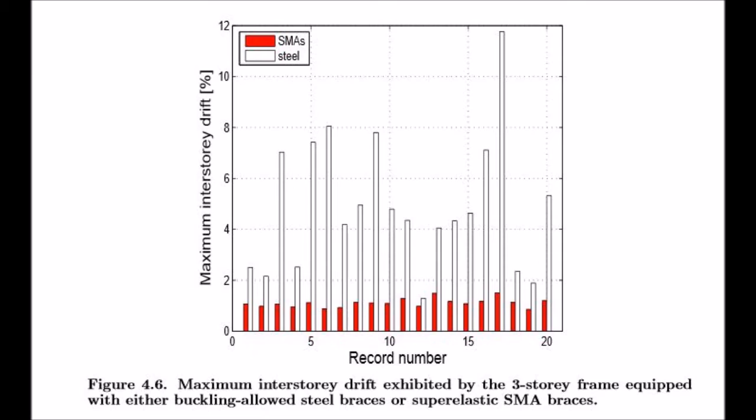This figure shows that the shape memory alloy braces were much more effective in reducing the inter-story drift in a three-story frame, with the SMA's recentering ability allowing it to experience an average maximum inter-story drift of around 1.5%, while the buckling allowed steel braces commonly experienced an average maximum inter-story drift of over 4%.